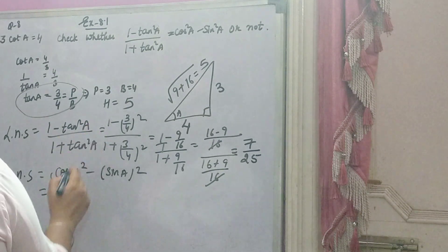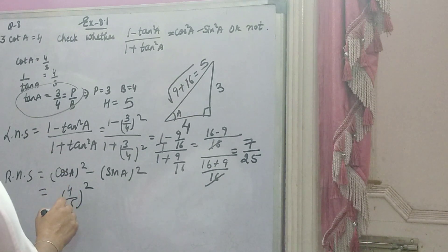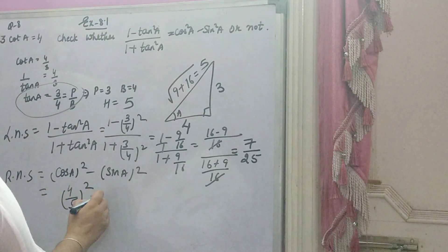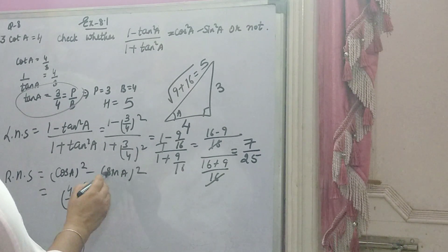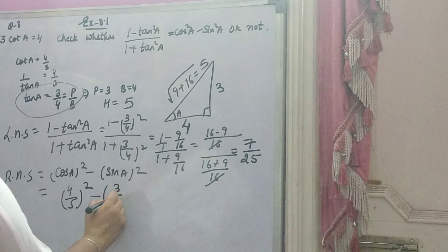Cos ki value hai 4 over 5. Description aap dhekh lena, isko yaad karne ka. Values kaisa nikalti hai, cos ki kya hoti hai, sin ki kya hoti hai. Description me link diya hoga, you can see. Sin hai, perpendicular by hypotenuse. Means, kya hoga, 3 by 5.